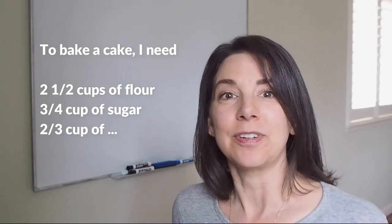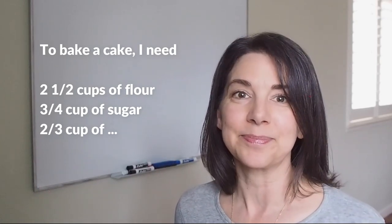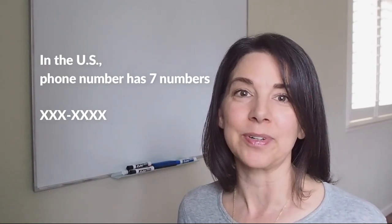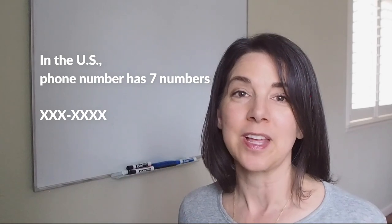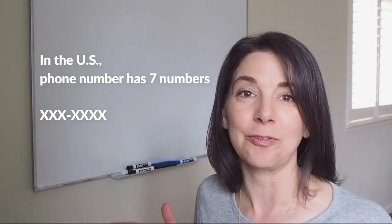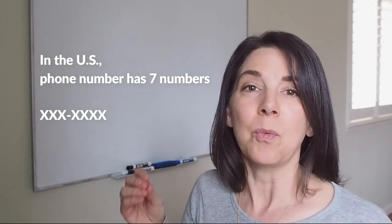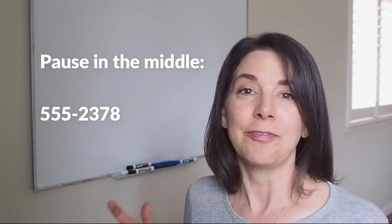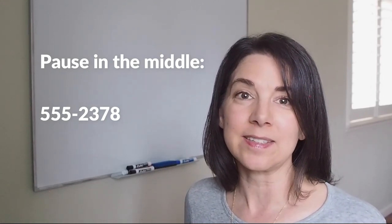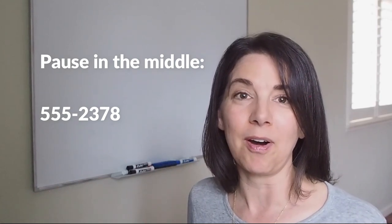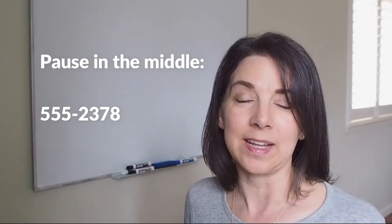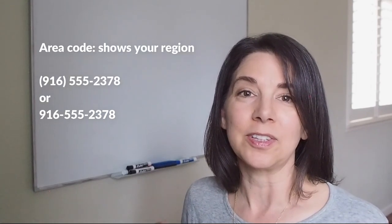Next let's talk about numbers in phone numbers and addresses, because these are always tricky. In the United States, your phone number consists of seven numbers, and we put them into two groups: the first three numbers and then the second four numbers. And we separate them with a dash. And when we say them, we pause in the middle. For example, 555-2378. So you can hear that I pause: 555, 2378.